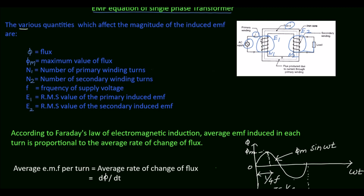The various quantities which affect the magnitude of the induced EMF are: φm, the maximum value of the flux; N1, the number of turns in the primary winding; N2, the number of turns in the secondary winding; f, the supply frequency; E1, the RMS value of induced EMF in the primary winding; and E2, the RMS value of induced EMF in the secondary winding.